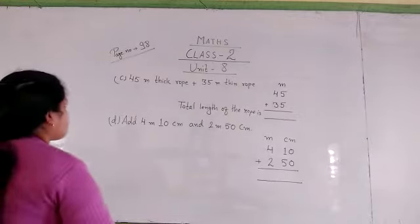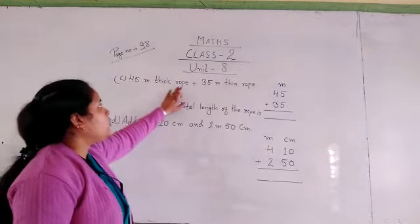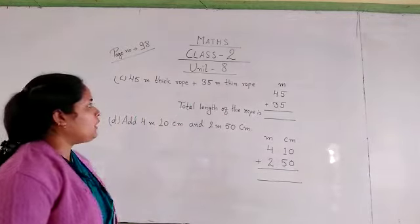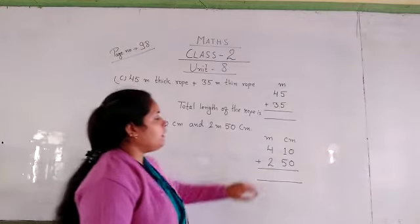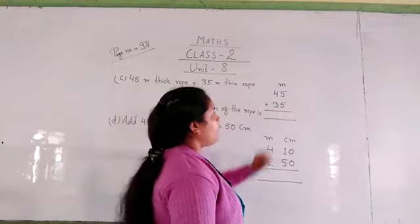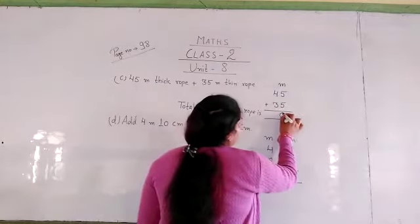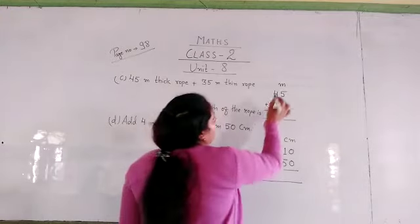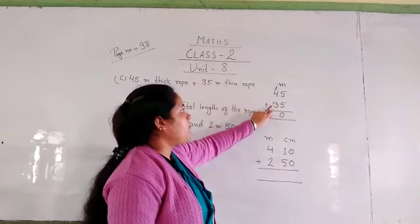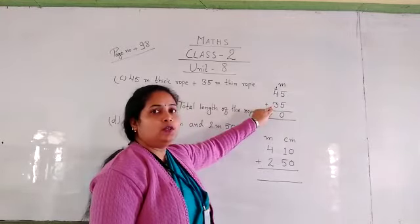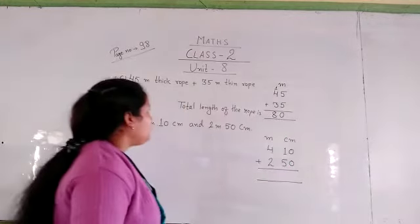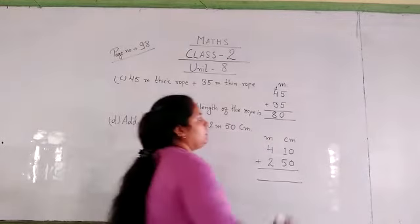Next question C: 45 meter thick rope plus 35 meter thin rope. We find the total length of the rope. We add 45 meter plus 35 meter. 5 plus 5 is equal to 10. We write 0 and 1 is carryover. Now 4 plus 1 is 5, and 5 plus 3 is equal to 8. We write 8. The total length of the rope is 80 meter.